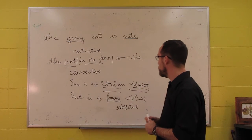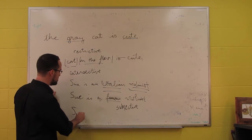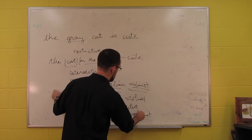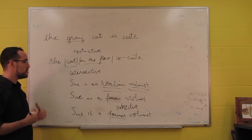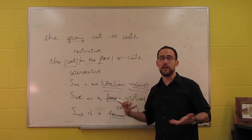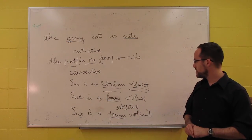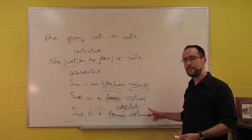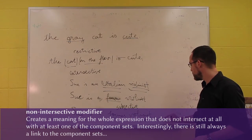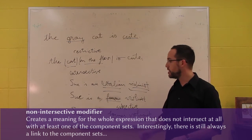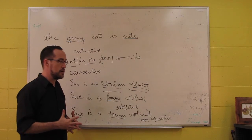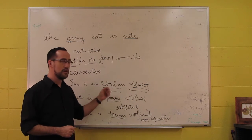And then there are some modifiers that are not intersective at all. If we say Sue is a former violinist, then former takes her out of the set of violinists altogether — she can't be a violinist if she used to be one. So whatever former is doing, it is not providing the set of anything. It's not the set of former things; rather, it describes things that used to be violinists but are not in the set of violinists. We call this kind of meaning non-intersective. We have intersective modification, which is the easy one, and then subsective and non-intersective modification, which are trickier — we'll look at ways of formalizing those.